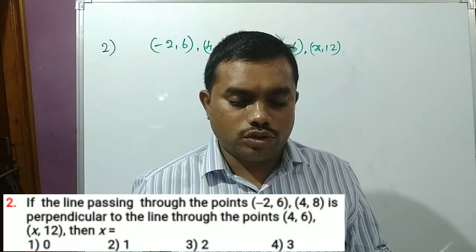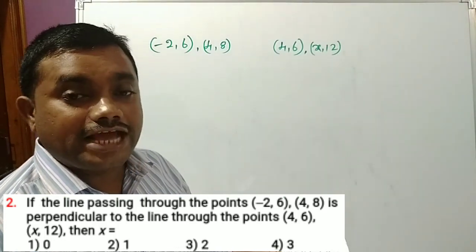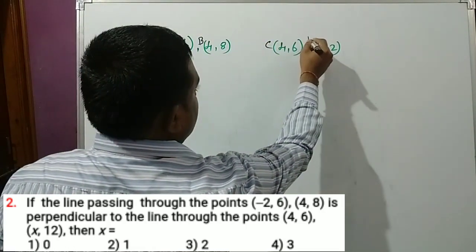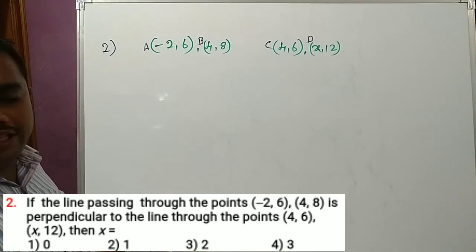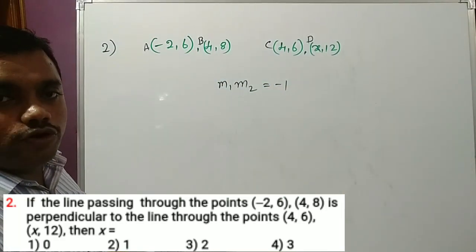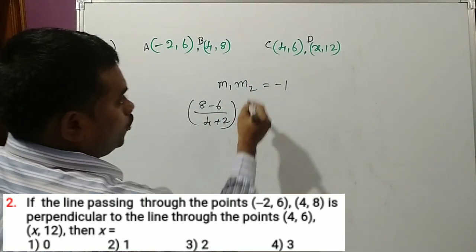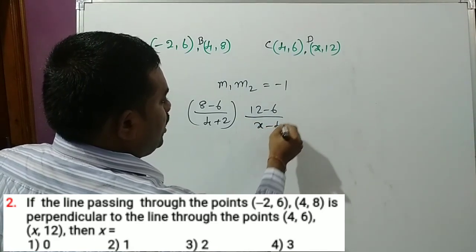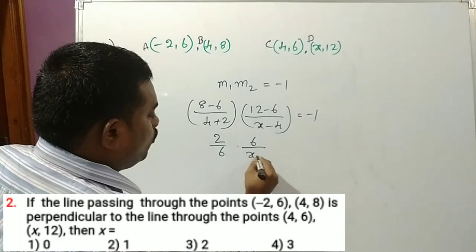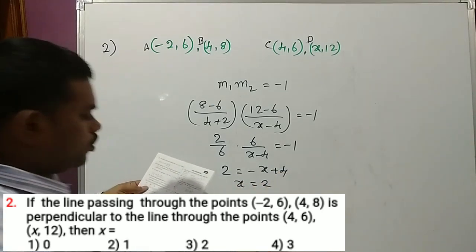Question 2: If the line passing through points (minus 2, 6) and (4, 8) is perpendicular to the line through (4, 6) and (x, 12), find x. Taking these as lines AB and CD, if AB is perpendicular to CD, then m1 times m2 equals minus 1. So (8 minus 6)/(4 plus 2) times (12 minus 6)/(x minus 4) equals minus 1, giving 2/6 times 6/(x minus 4) equals minus 1, so 2 equals minus x plus 4, and x equals 2. Option 3 is the correct answer.